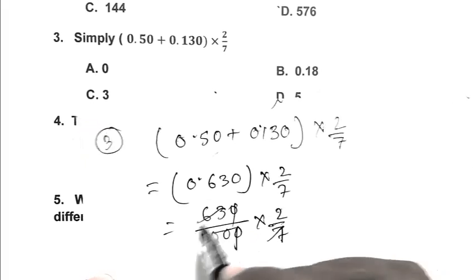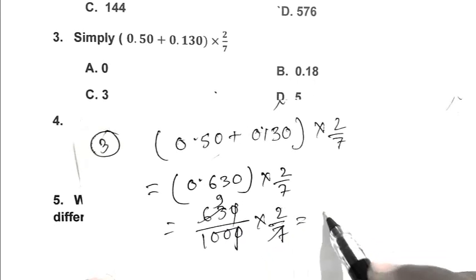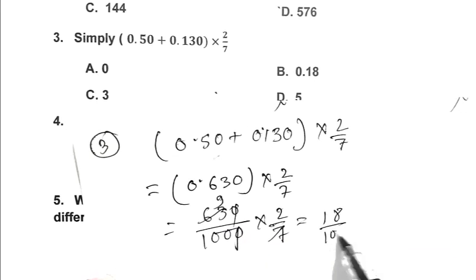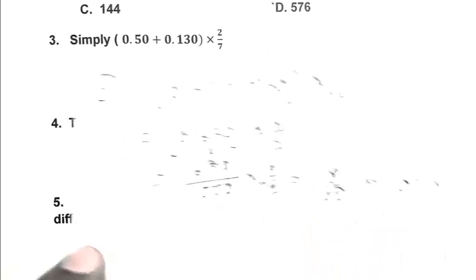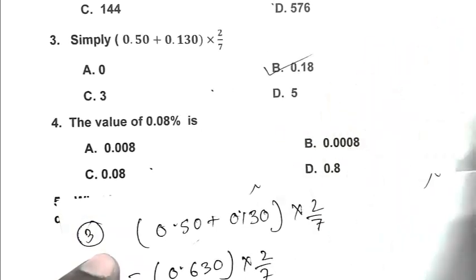This gives us 260 upon 7000, which simplifies to 0.037. Then 0.50 plus 0.037 equals 0.537. Wait, let me recalculate. The result becomes 18 upon 100, which is 0.18. So B is the right answer.